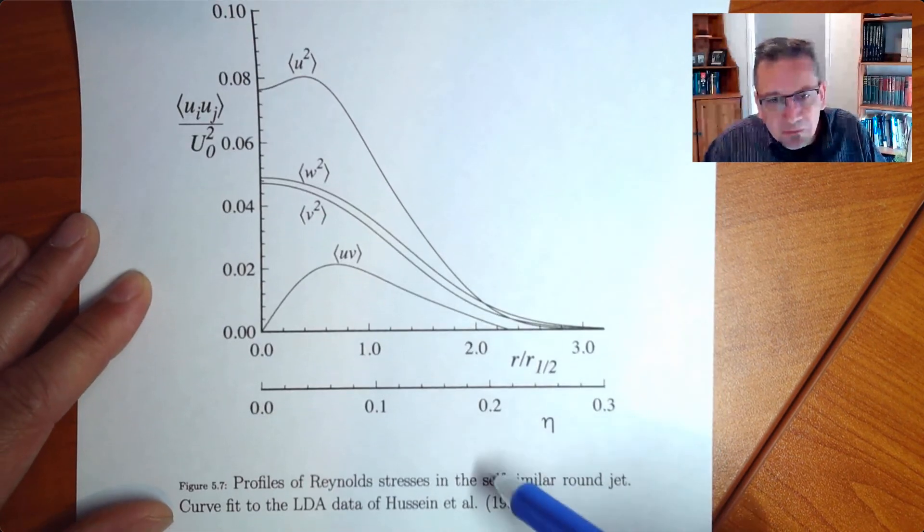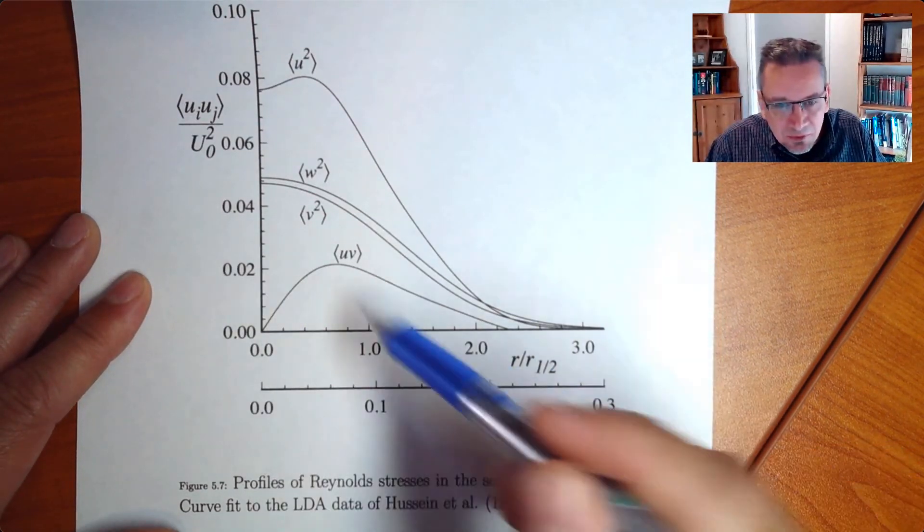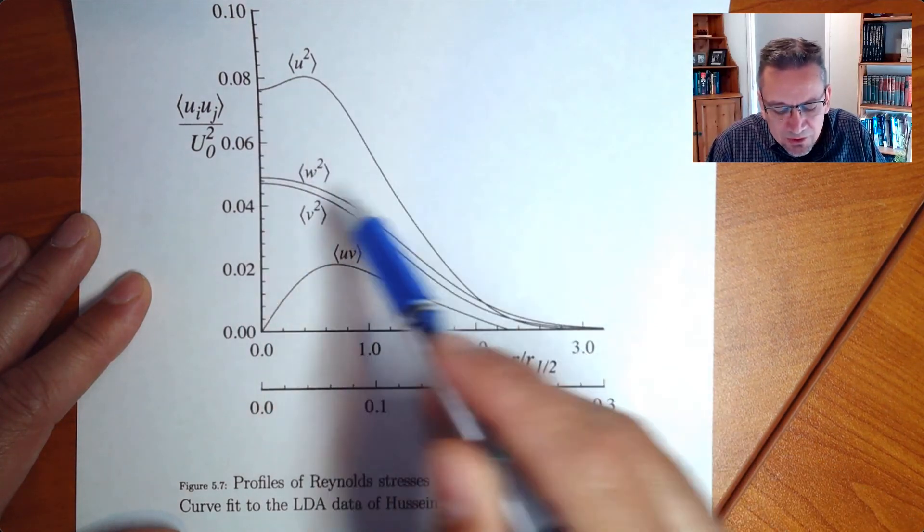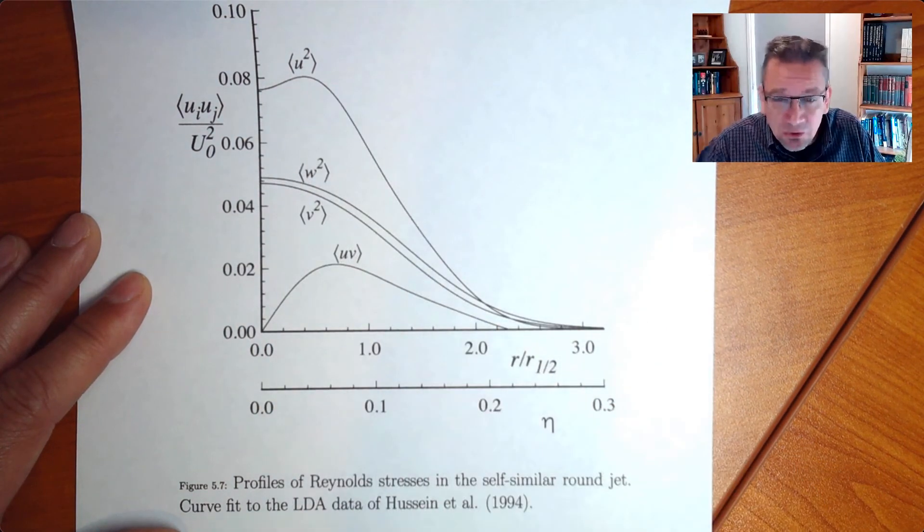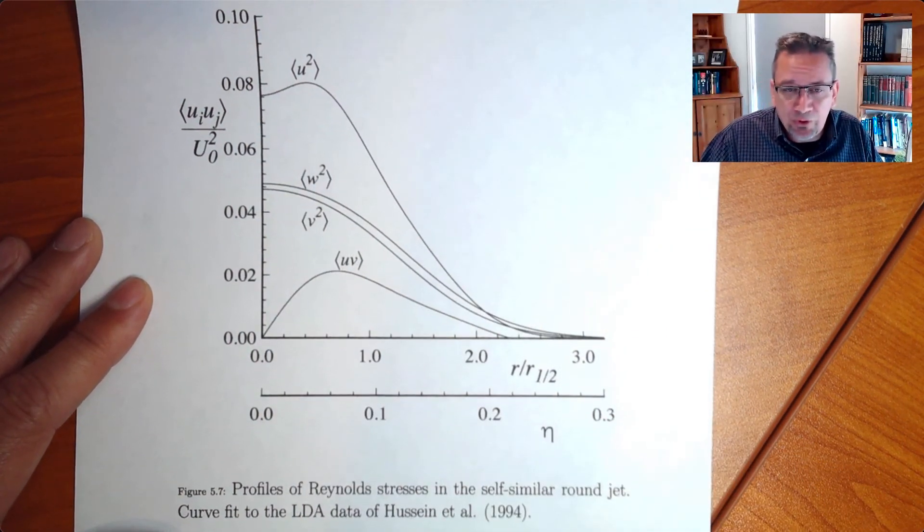And you see that all of them, this one is already the curve fit, all of them more or less fit onto the same graph as well. So all of the turbulent quantities are falling onto the same graph.